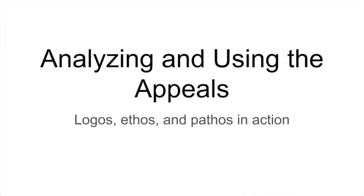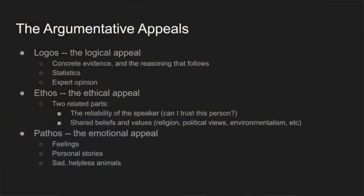Argumentation has been studied in the western world since at least 2400 years ago in Athens, when Aristotle came up with three categories of argumentative appeals — three strategies writers, or in his day speakers, would use to convince their audiences. Maybe you have heard these before: they are logos, ethos, and pathos.